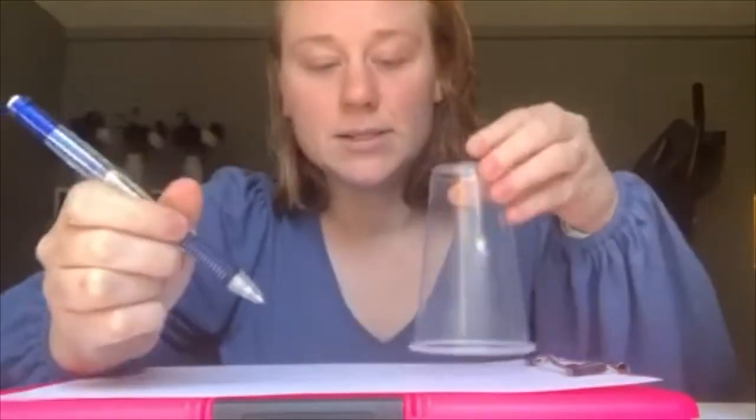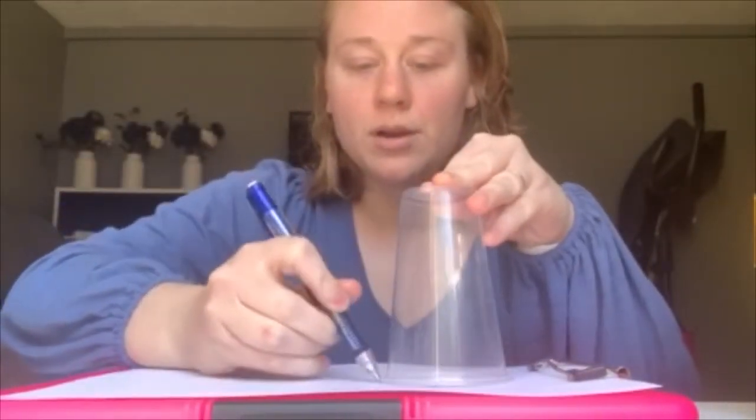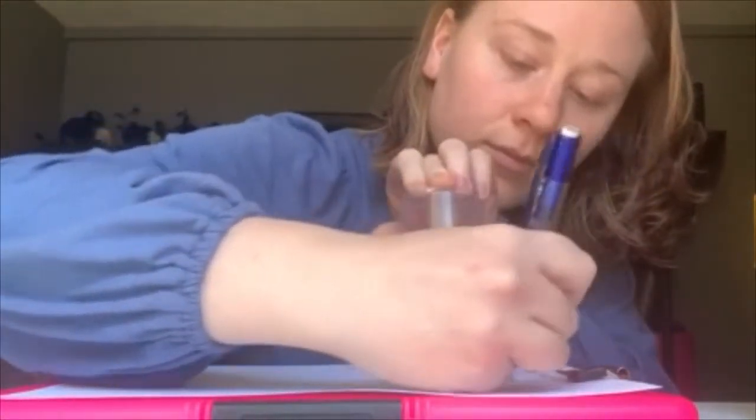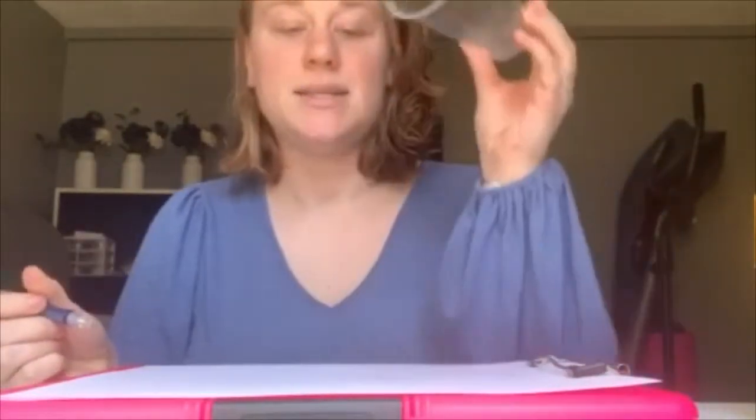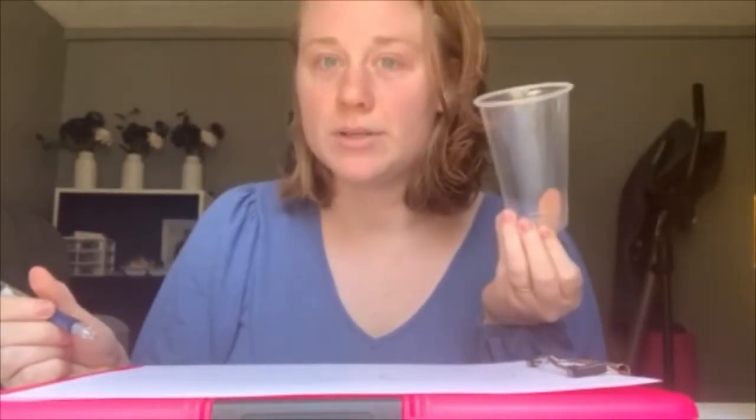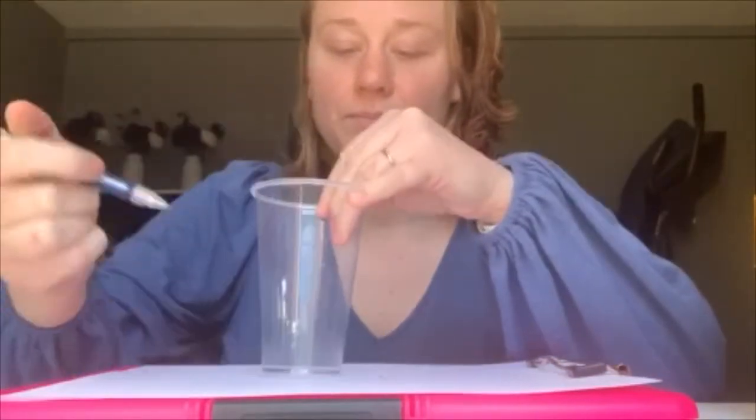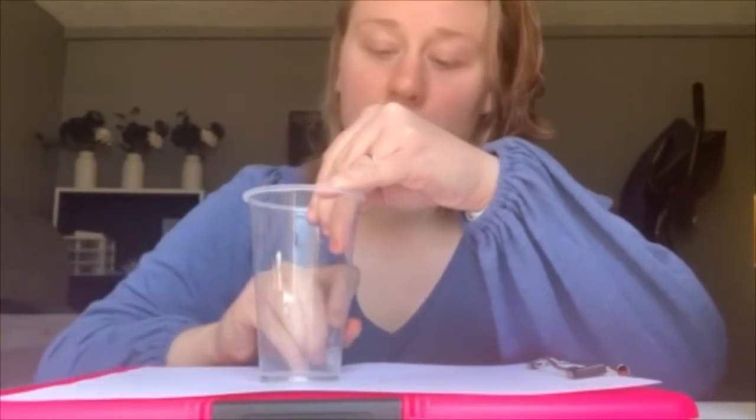So we're going to start by tracing using a pencil or a pen our circles. And then I'm going to make a smaller bird, so since this circle is bigger than this side, I'm going to trace the bottom for the baby bird. So now I will have a mama bird and a baby bird.